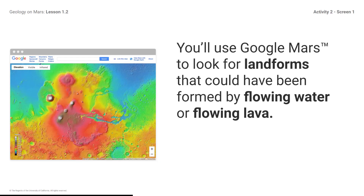You'll use Google Mars to look for landforms that could have been formed by flowing water or flowing lava. Remember that just because there are no bodies of liquid water on Mars now does not mean that they didn't exist on Mars in the past. Scientists look for landforms that might have been formed by flowing water in the past, but even when scientists find a landform that looks like it could have been formed by flowing water, it is difficult to be certain.